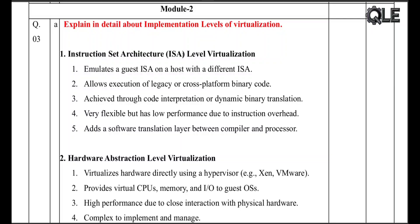Let's start with instruction set architecture level virtualization, or simply ISA level. This is the most flexible form of virtualization. Imagine running an old game made for a different type of computer on your modern system — that's what ISA level lets you do. It emulates a guest CPU architecture on a totally different host, done using code interpretation or dynamic binary translation.